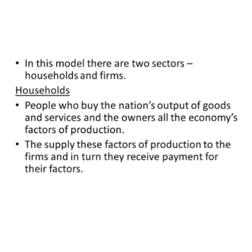In this model, there are two sectors: households and firms. Households — we, the people — are those who buy the nation's output of goods and services and are the owners of all the economy's factors of production. They supply these factors of production to the firms and, in turn, they receive payment for their factors. The households render services, and the firms produce output.